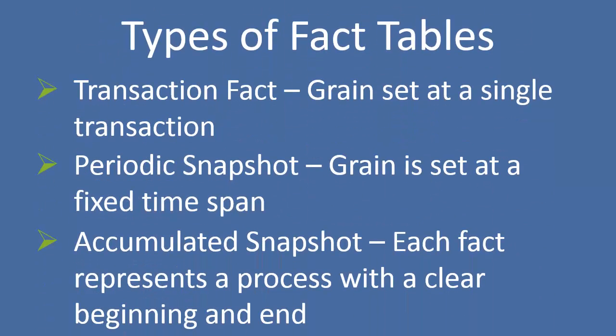There are three primary types of fact tables. First, you have your transaction fact. This is a fact table where every record represents an individual transaction, such as the sale of an item in a store.